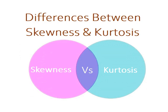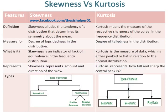Skewness versus kurtosis. Skewness alludes to the tendency of a distribution that determines its symmetry about the mean, whereas kurtosis means the measure of the respective sharpness of the curve in the frequency distribution.